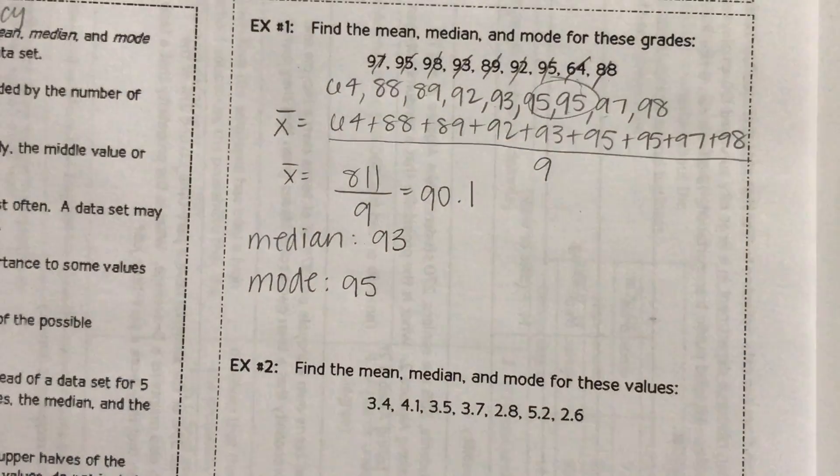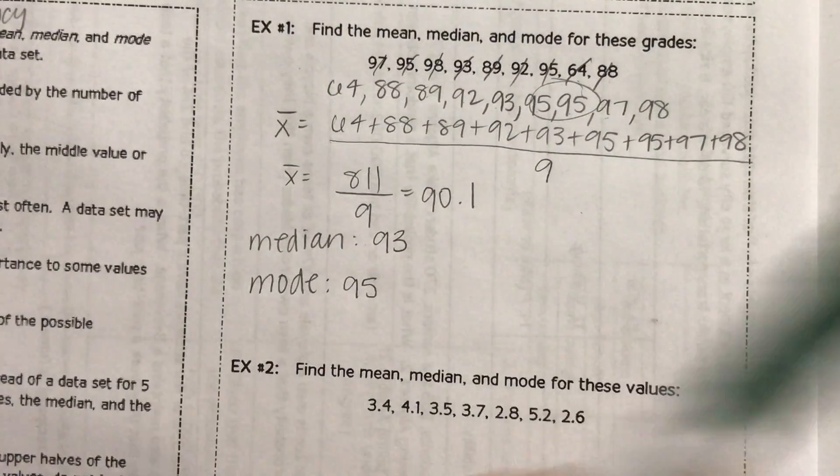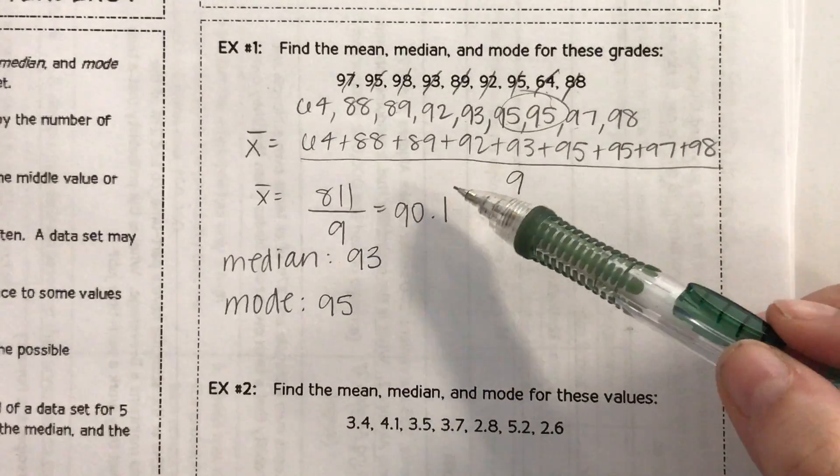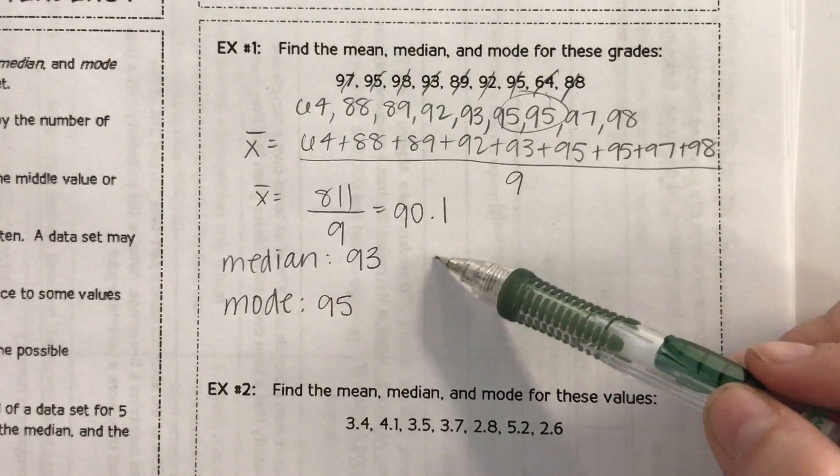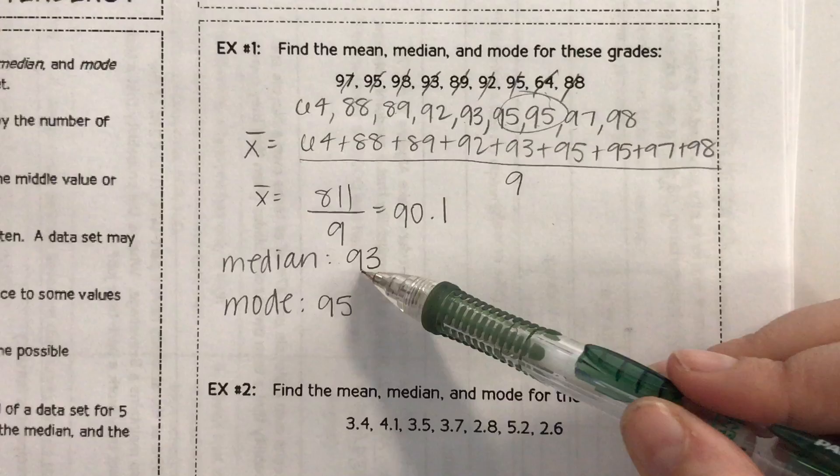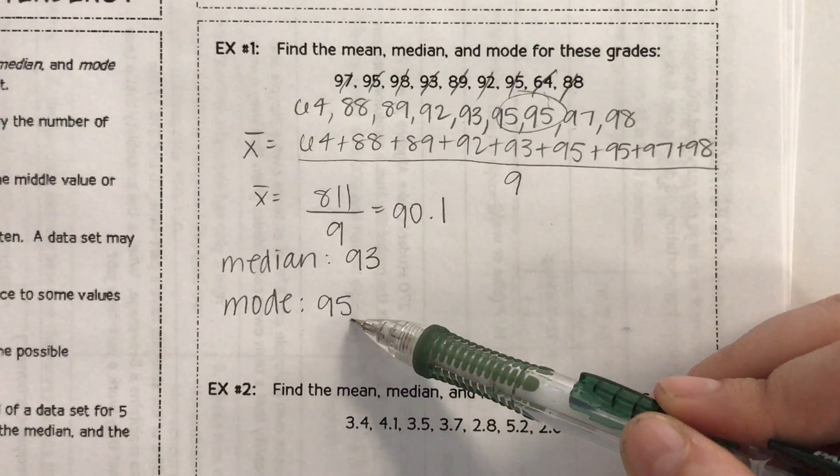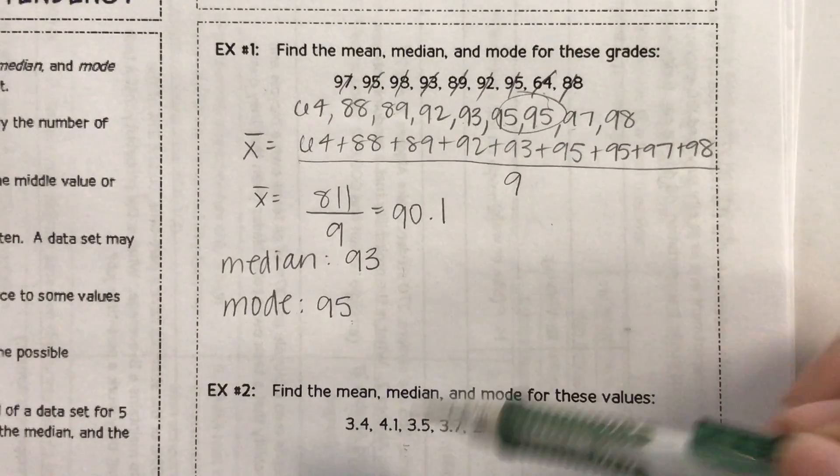So mean, median, mode - they tell us a little bit about the data. So the average score is a 90.1, the middle score is a 93, and the one that occurred the most often is 95. So we'll do example two in class.